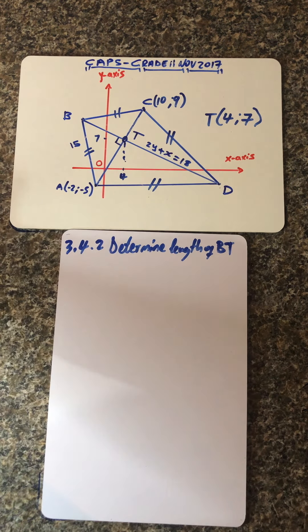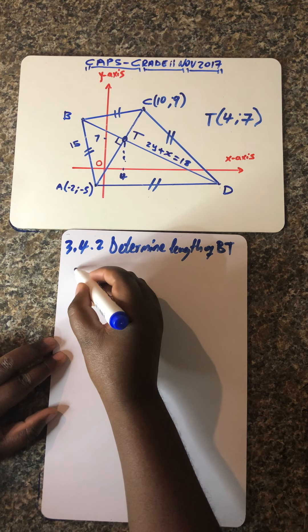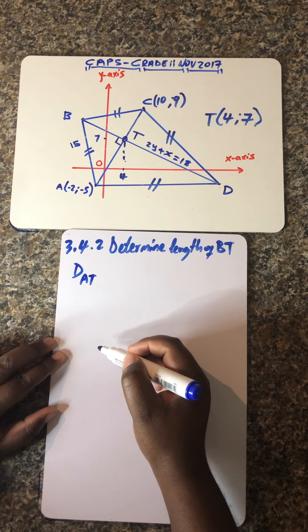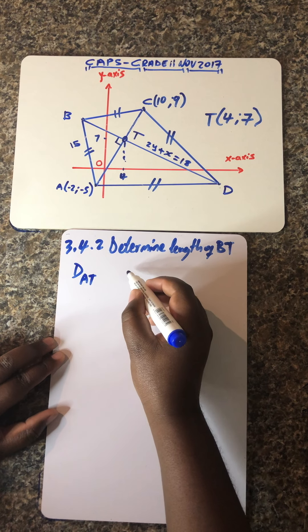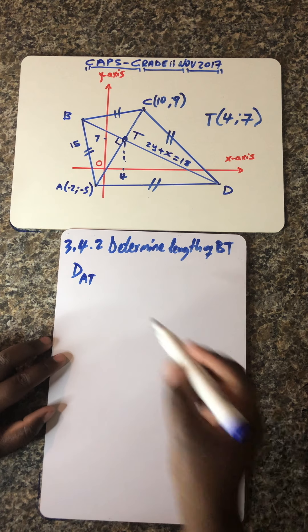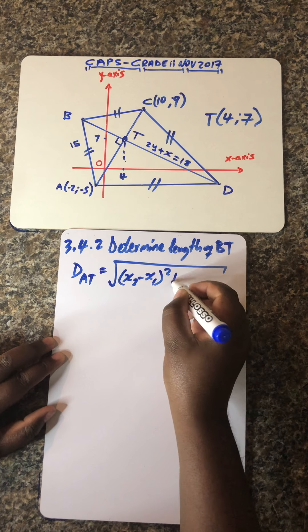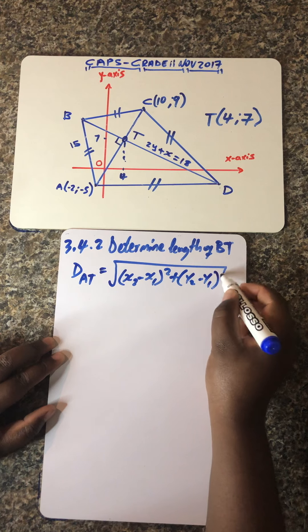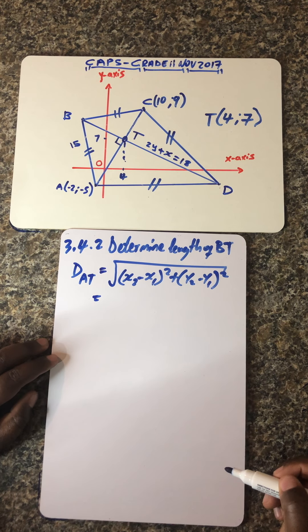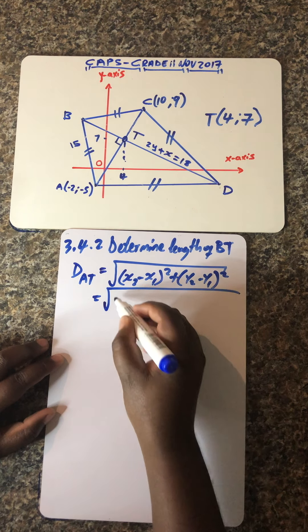So let's get started. What we're going to do is calculate the distance AT. After that, we'll use the Theorem of Pythagoras to calculate the length of BT, which is what the question wants. The distance formula, as you know, is: the square root of (x₂ − x₁)² + (y₂ − y₁)². You've done many calculations related to distance in Grade 10, so it's just a matter of substituting.